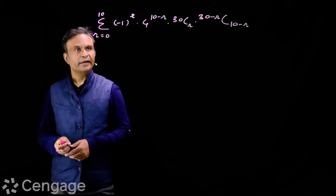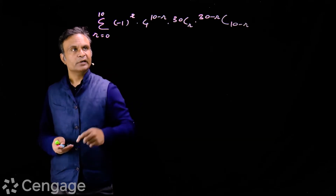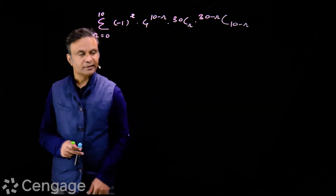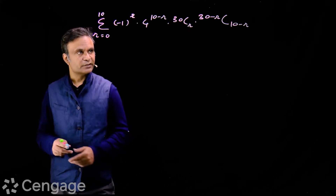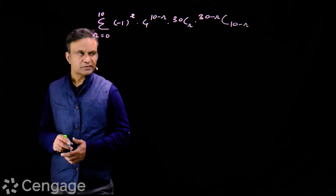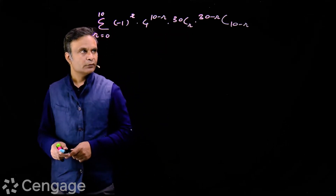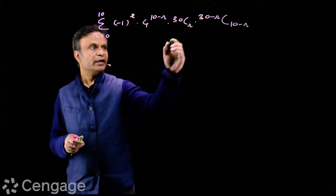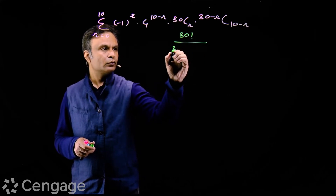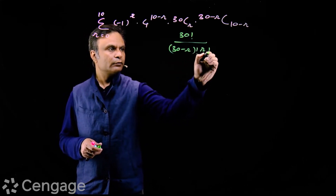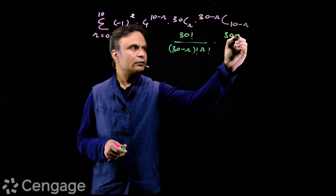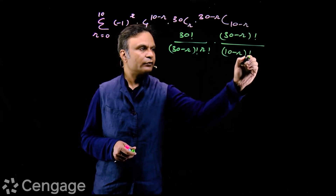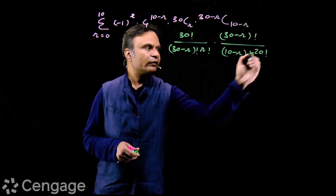Now we have this next problem: find the sum of sigma of (-1)^r times 4^(10 minus r) times 30Cr times (30 minus r)C(10 minus r). In the first step, we simplify this term by expanding the two binomial coefficients. We have 30 factorial over (30 minus r) factorial times r factorial.